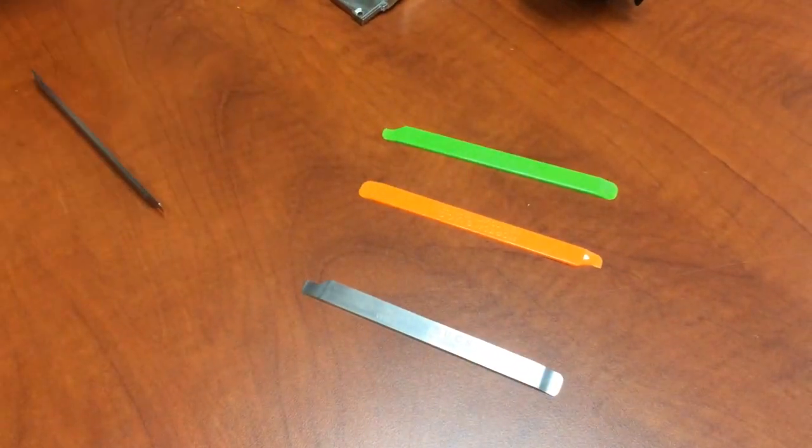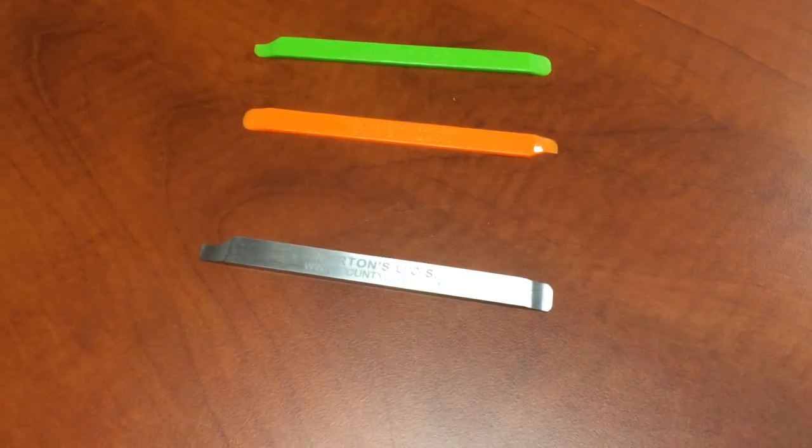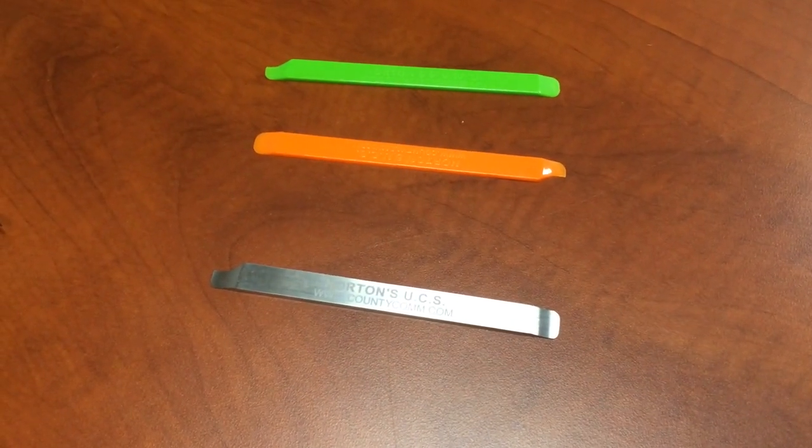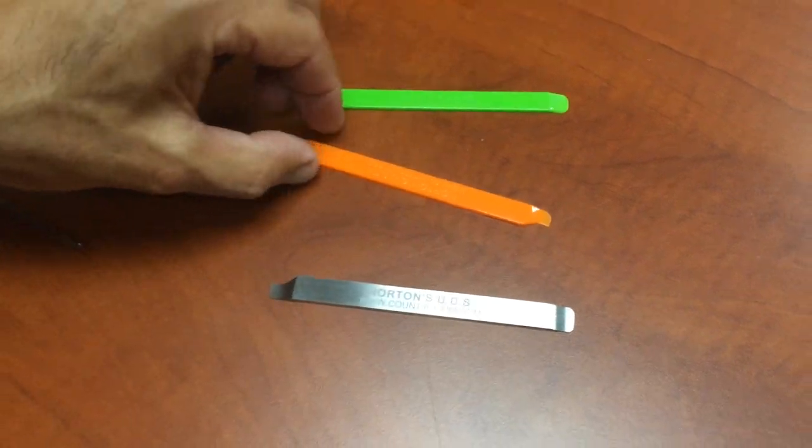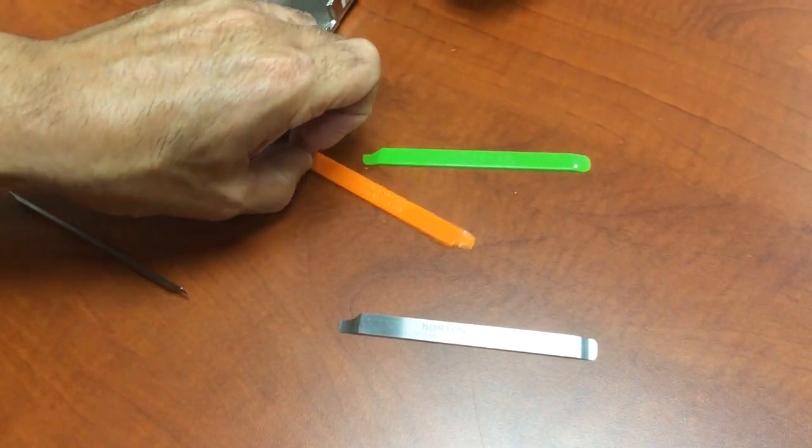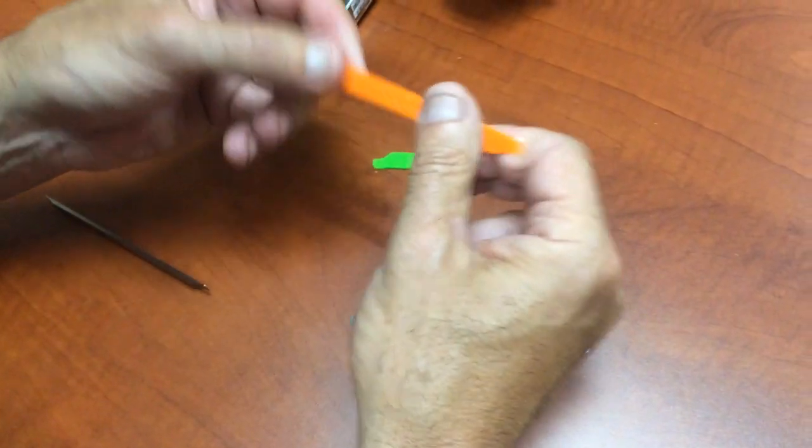Okay, so what do you got there? Today we're going to show the Norton UCS stick in titanium. For those that have been following us for years, you know that we have the Norton UCS sticks in polycarbonate, and they've been used all over the world for many different things, but mainly they were designed for weapons cleaning.